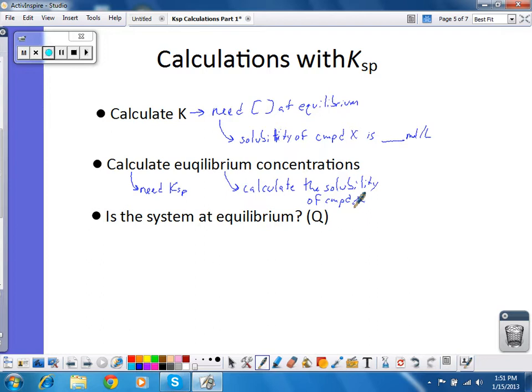And then the third question we can ask is, is this system at equilibrium? And remember, for that we use Q, because we don't know if the system is at equilibrium. And the way this gets asked, specifically in the Ksp application, is, will a precipitate form?